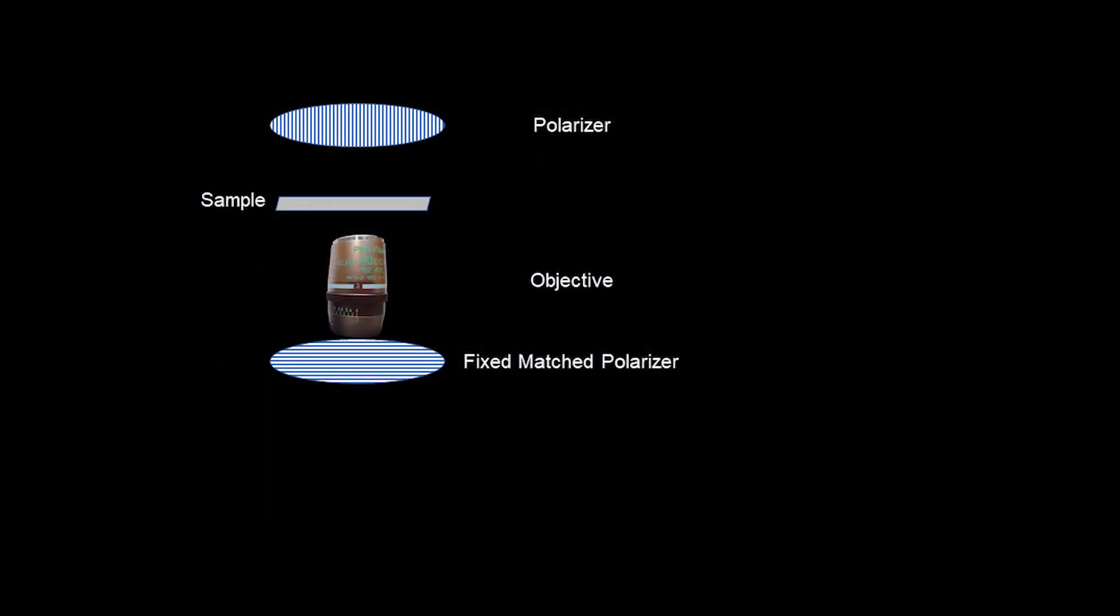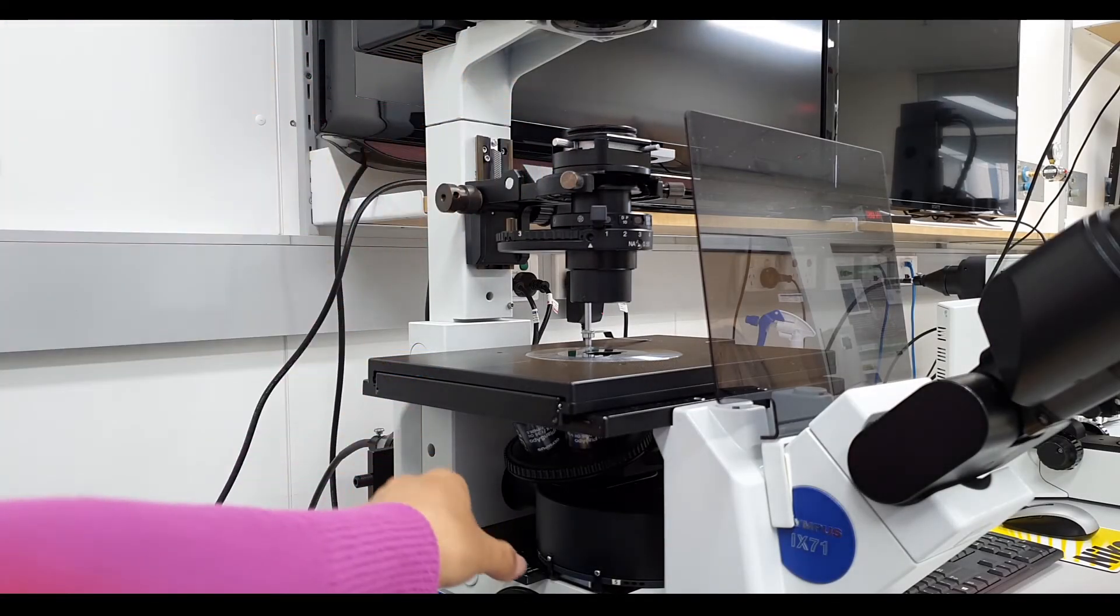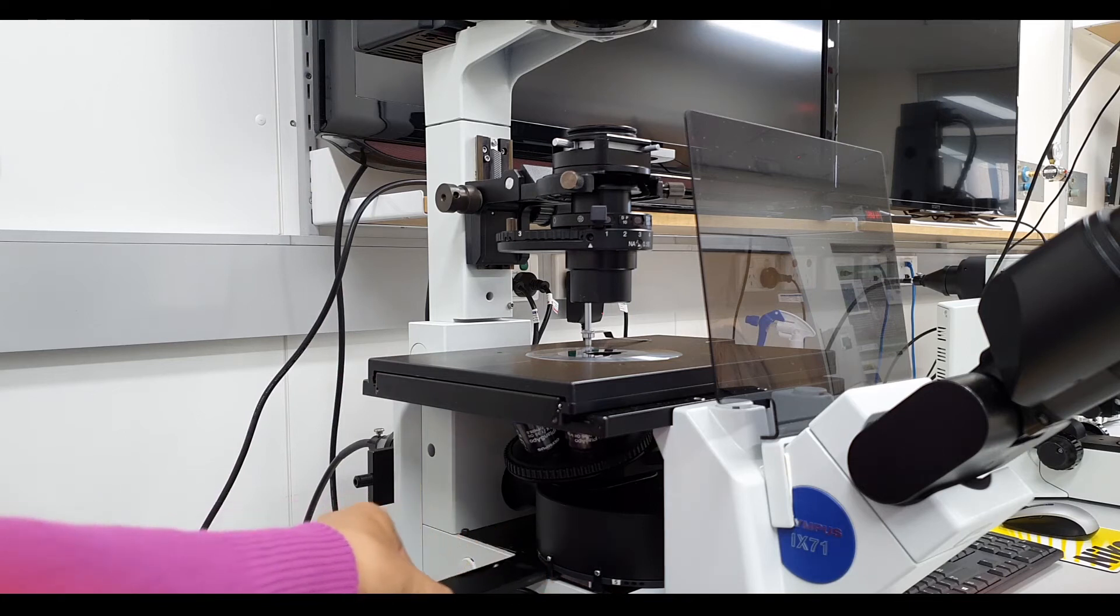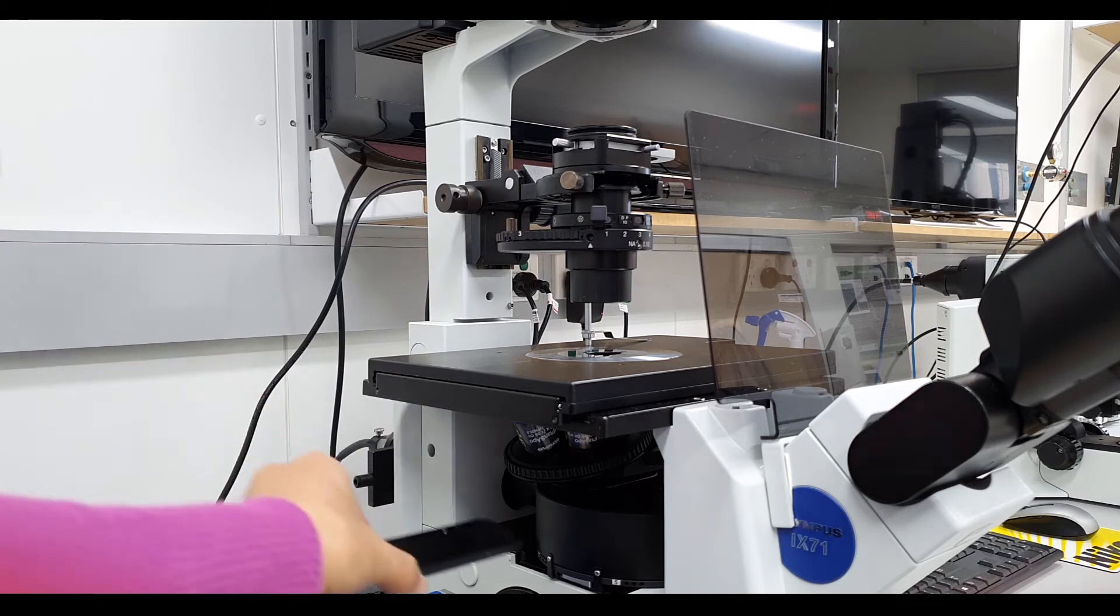The light from the lamp goes through a polarizer and then after the light has transmitted through the sample and objective, it goes through a fixed matching cross polarizer before the light goes to the detector.